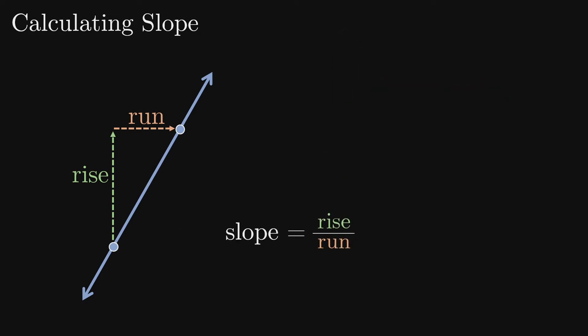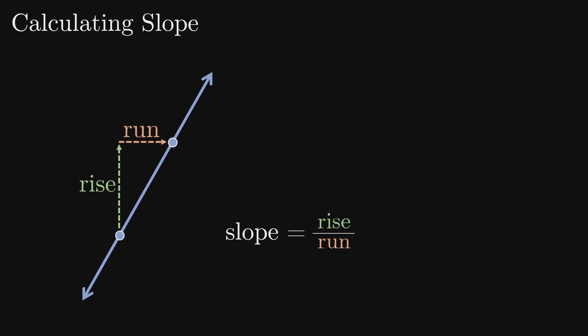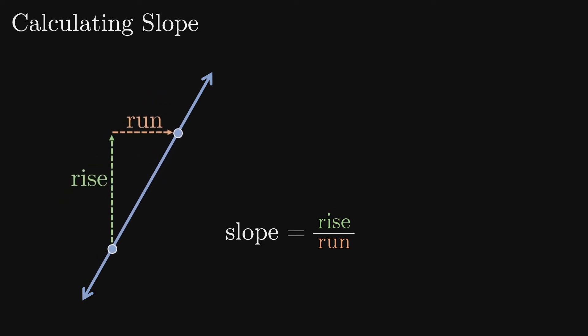You can choose any two points on a line to find its slope. Regardless of how close together or far apart these points are, you'll arrive at the same slope value.